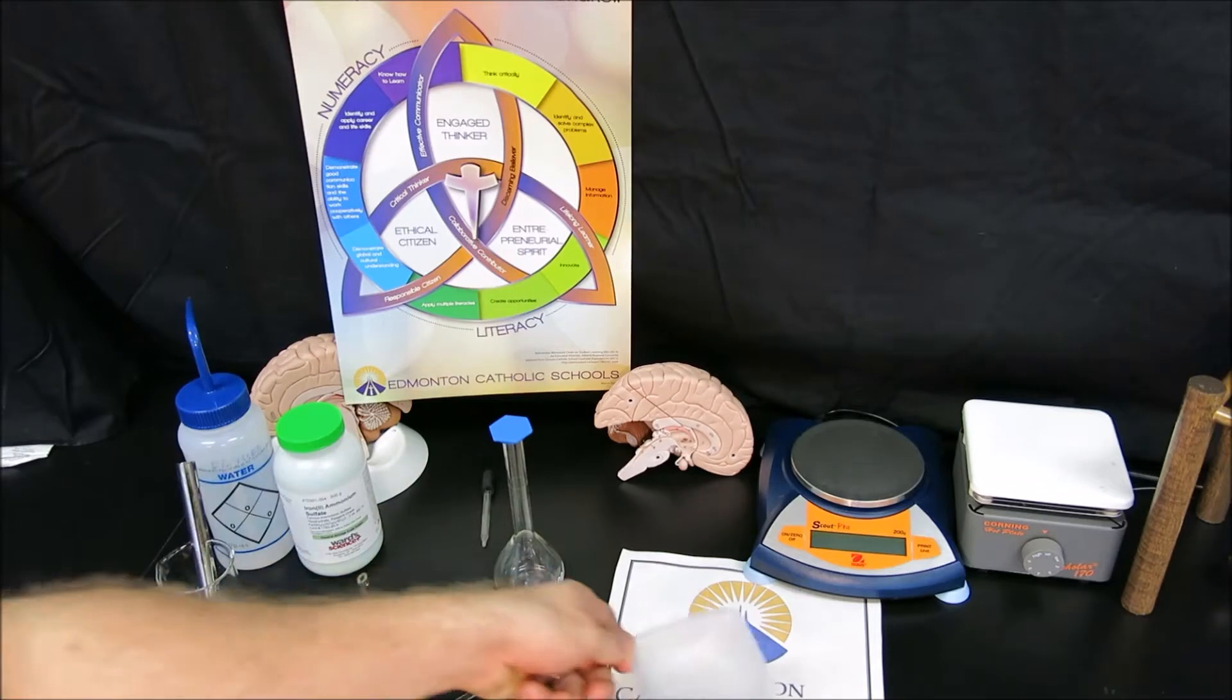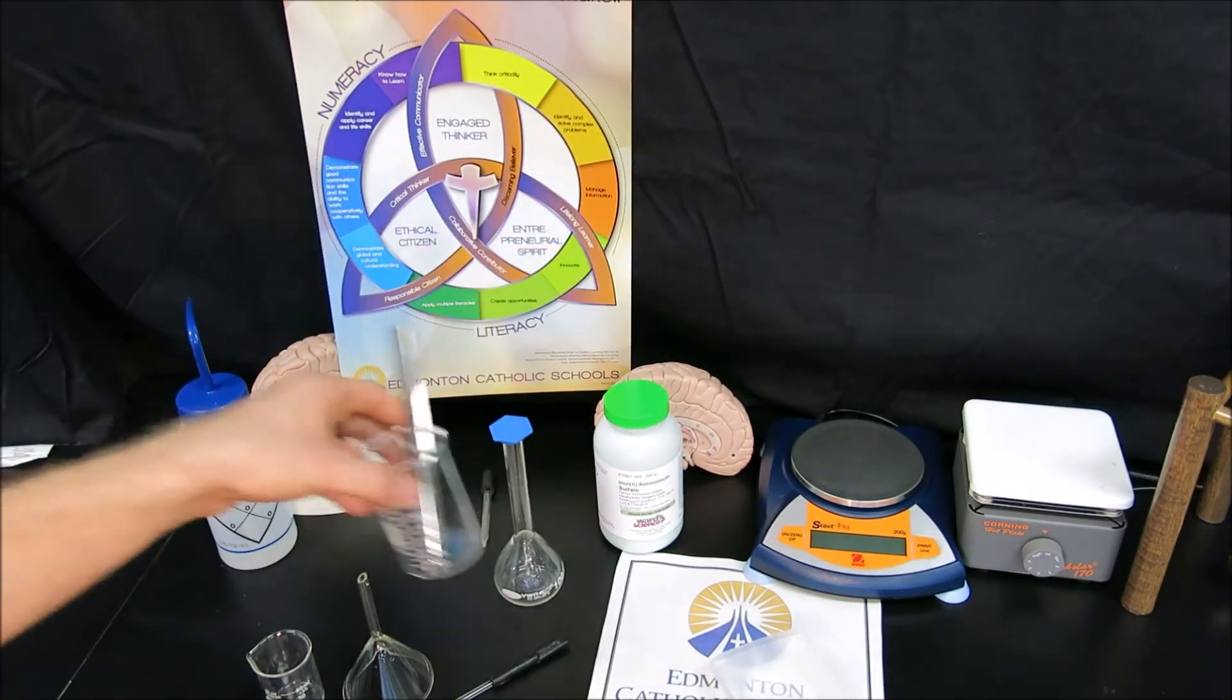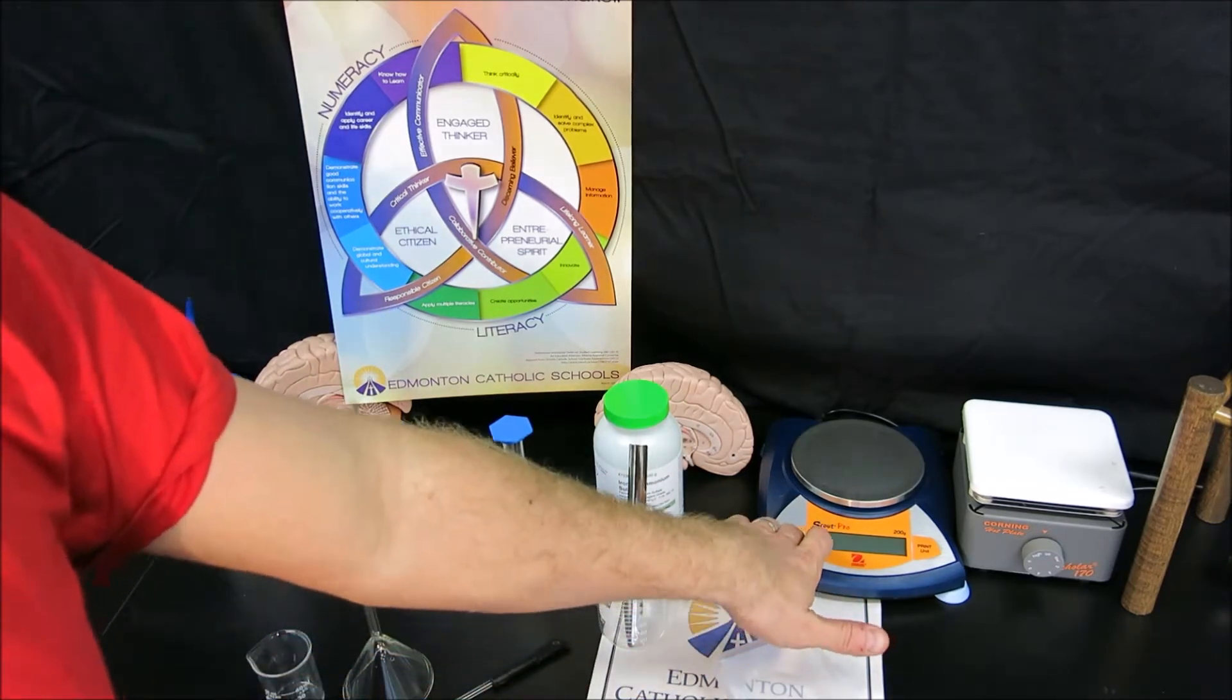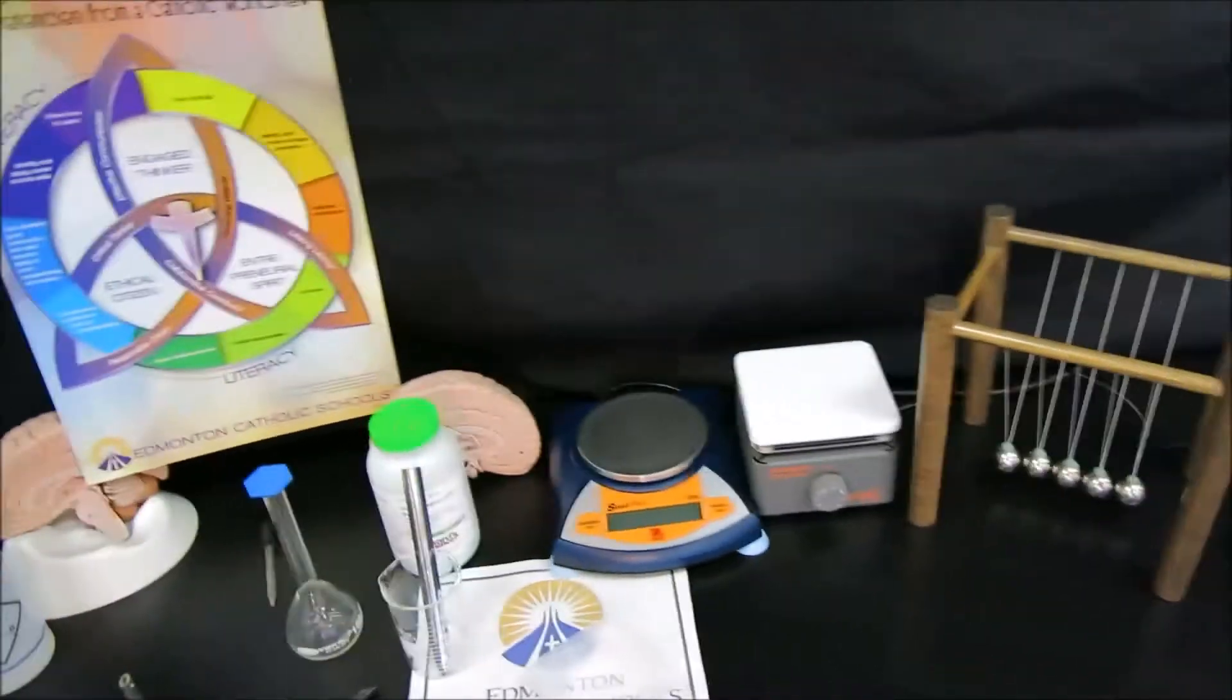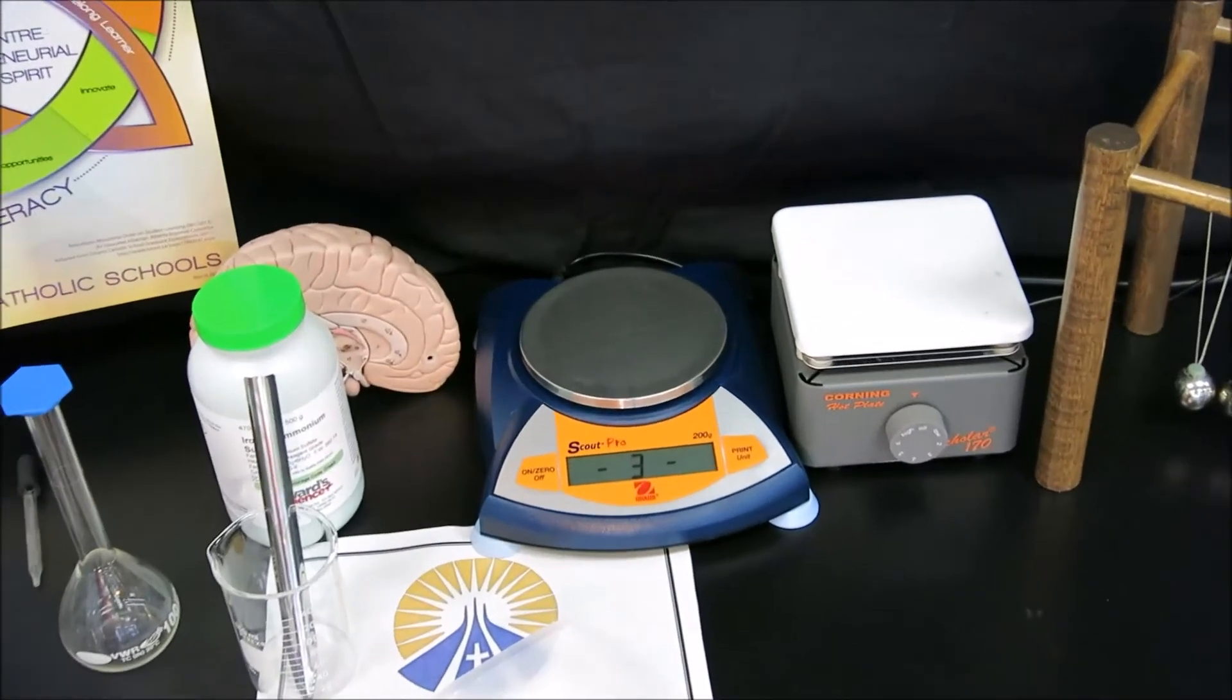We'll need our weighing boat, our solid, our spatula, and a waste container. We'll turn on our scale and allow it to get ready to record mass. Once it's ready, we are going to tare the scale,